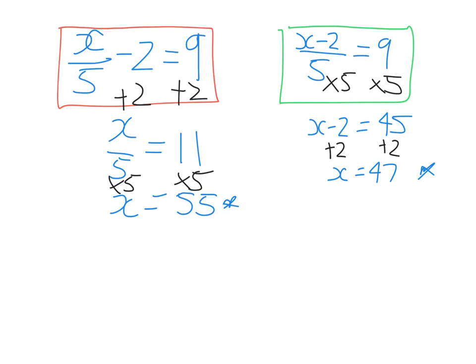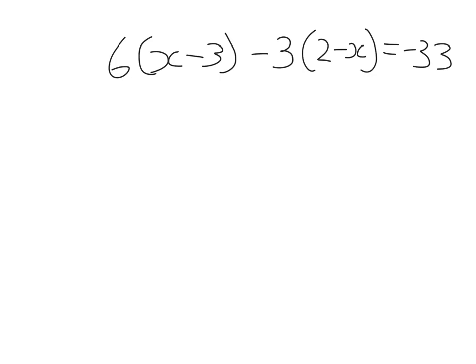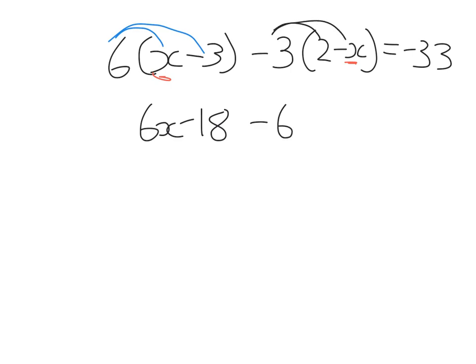Let's look at when x is in more than one spot in the equation. Before we can undo what has been done to x, we need to get x in one spot. What we're going to do is expand each bracket and collect like terms. Remember: you distribute the number outside the brackets to everything inside. So six times x, then six times negative three gives negative 18. Then negative three times two, and negative three times negative x — a negative times a negative is a positive — gives positive three x.